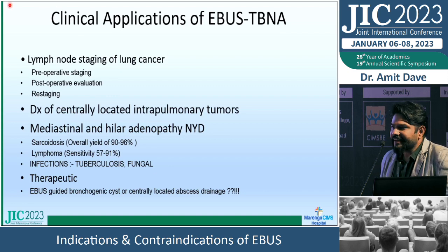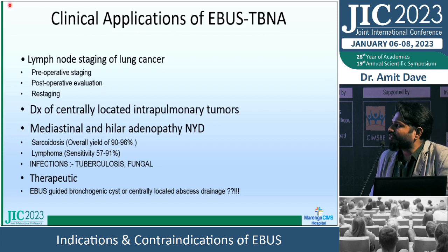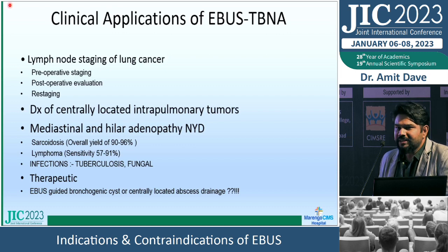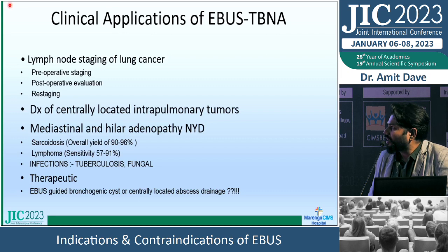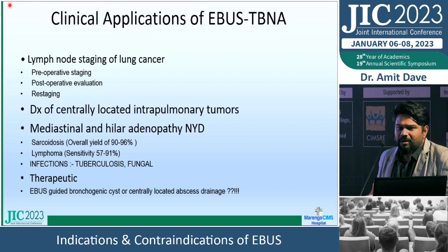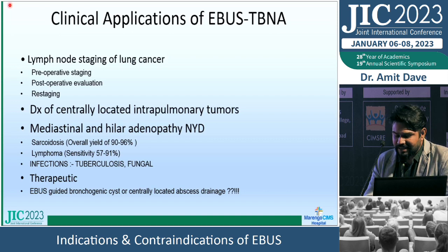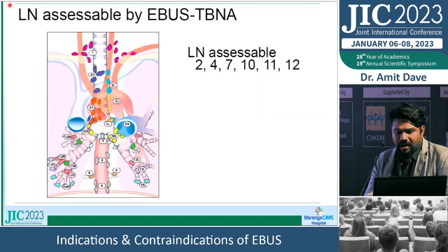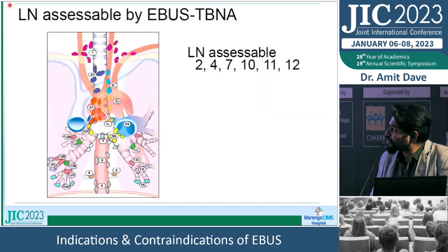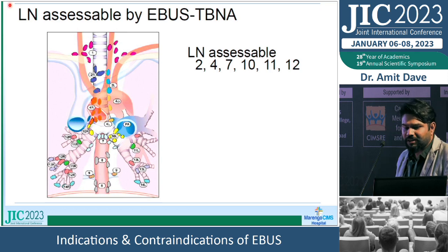The main indications include: staging of lung cancer whether preoperatively or for post-operative restaging, diagnosis of centrally located intrapulmonary tumors, benign mediastinal lymphadenopathy, and therapeutic indications. EBUS can access lymph node stations 2, 4, 7, 10, 11, and 12.